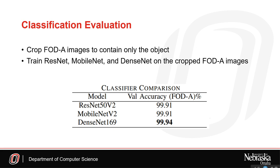The results of the classification component are discussed next. The classification component is evaluated separately from the localization component. We crop the objects in the FOD-A images to the bounding boxes included in the FOD-A annotations. We then train ResNet, MobileNet, and DenseNet on the cropped FOD-A dataset. As shown in the table, DenseNet performs the best out of these models with an accuracy of 99.94% on the FOD-A validation dataset.